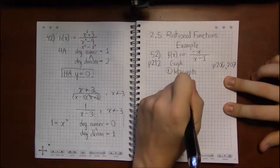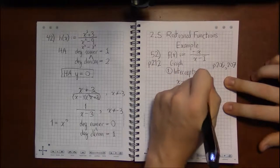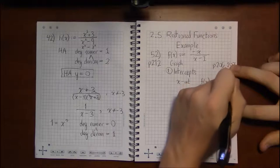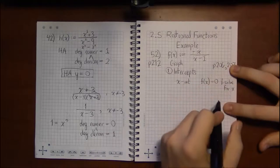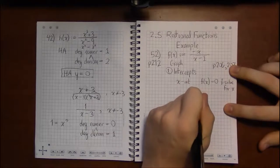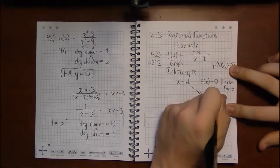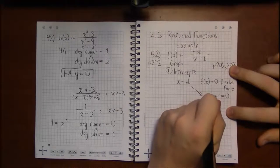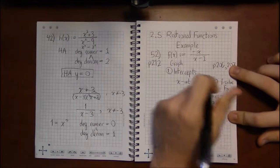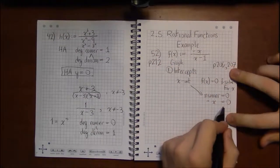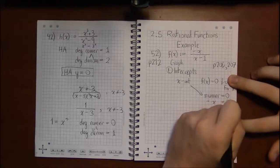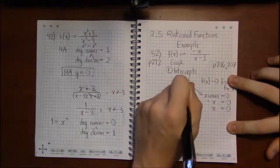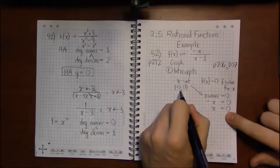So if we start with the x-intercepts, typically what we do is we set f(x) or y equal to 0 and solve for x. But with these rational functions, there's a shortcut. What you can do instead is just set the numerator equal to 0 and solve that, and that will give you the x-intercepts. So in our case, the numerator is -x. We set that equal to 0, multiply both sides by -1, and we find out that the x-intercept is the point (0,0), that y is 0 when x is 0.